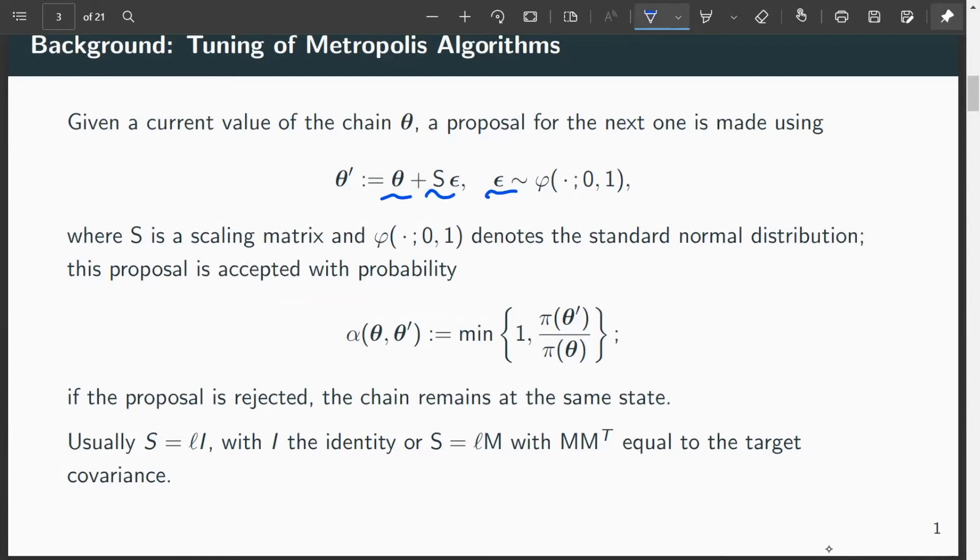Then the Metropolis algorithm proceeds by accepting the new proposed value theta dash by computing this acceptance ratio. The crucial question here is how to choose the scaling matrix S. Common choices include a proportional identity matrix—L is some factor times the identity matrix—or if you want to be more sophisticated, you can match the target covariance matrix, usually done by something proportional to a Cholesky decomposition.